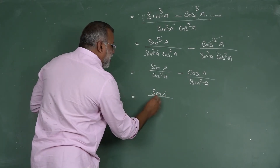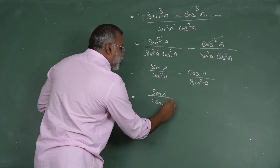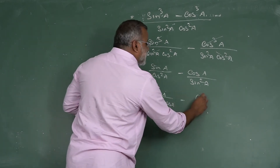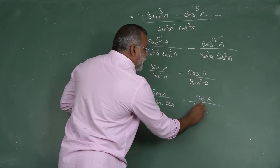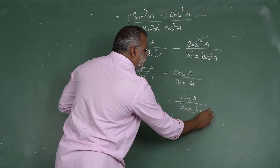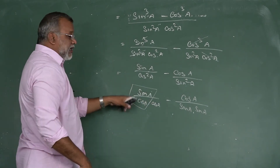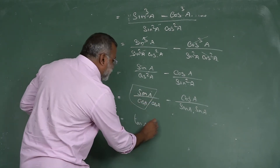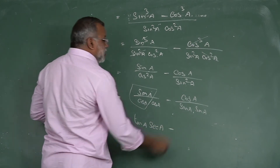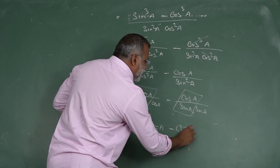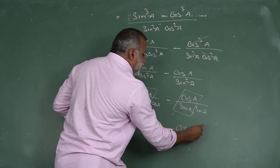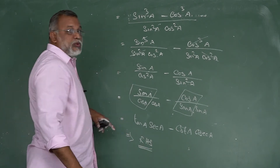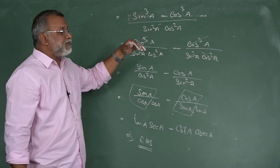Further splitting: sin A/cos²A = (sin A/cos A) · (1/cos A) = tan A · sec A. Similarly, cos A/sin²A = (cos A/sin A) · (1/sin A) = cot A · cosec A. Therefore the expression simplifies to tan A · sec A - cot A · cosec A, which is your RHS proof.